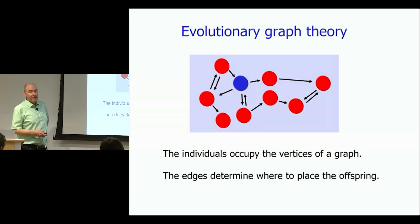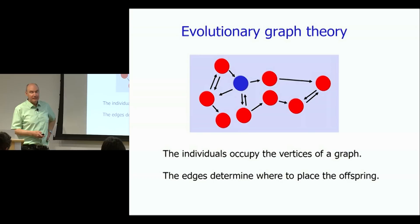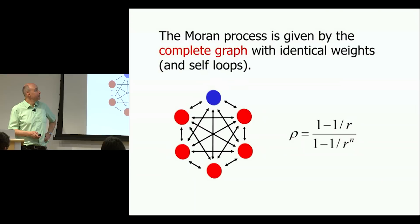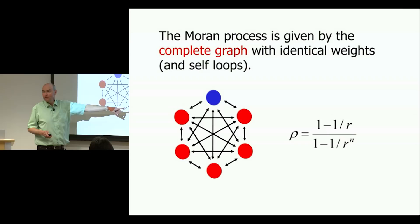To address this, we formulated evolutionary graph theory, beginning with the PhD thesis of Paris Lieberman who also worked here at the Broad Institute. The idea is that individuals occupy the vertices of a graph and the edges determine where to place the offspring — it's the Moran process but now on a general graph. The Moran process is the special case of a complete graph with identical weights and self-loops. We want to see whether changing the population structure changes the fixation probability.